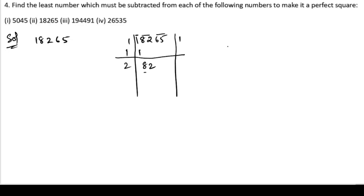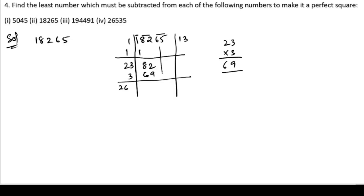In the 2-times table, the nearest number to 8 is 8 (2×4), but we take 3. Three threes are 9, three twos are 6, so it is 69. Write down 3 again; 26 is the divisor. Bring down 65, giving 1365. Subtracting: 12 minus 9 is 3, 7 minus 6 is 1. Remainder so far: 1365.